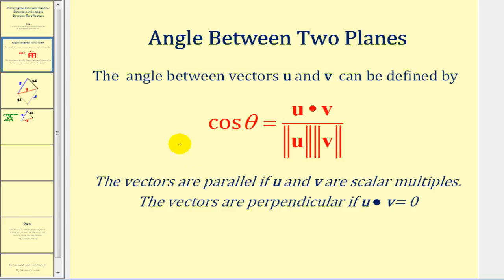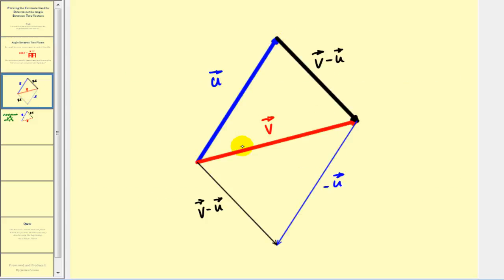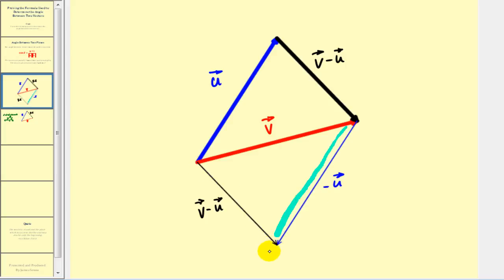Before we start our proof, we're going to take a look at the sketch of vectors u and v. Here's vector u in blue and vector v in red. We want to determine v minus u, or v plus the opposite of u, geometrically. To do that, we sketch the opposite of u at the terminal point of vector v, shown here as the thin blue vector. So vector v minus vector u is the vector with its initial point at the initial point of vector v and its terminal point at the terminal point of the opposite of vector u. We'll then reorient these vectors so that u and v share the same initial point and v minus u forms the third side of a triangle.